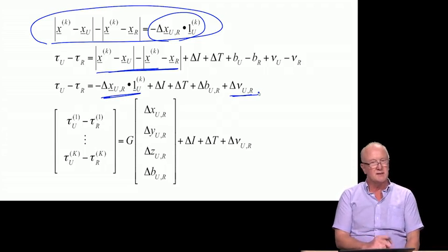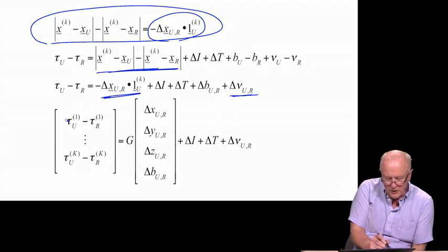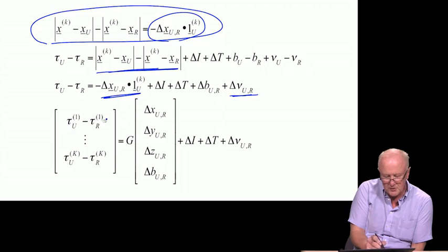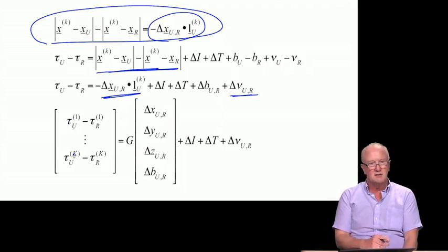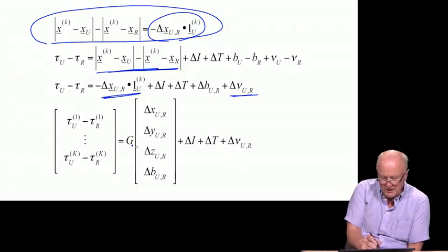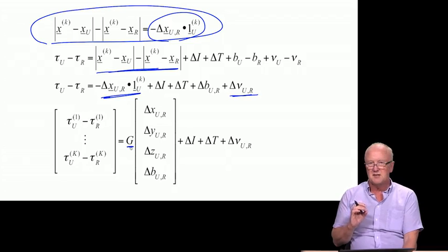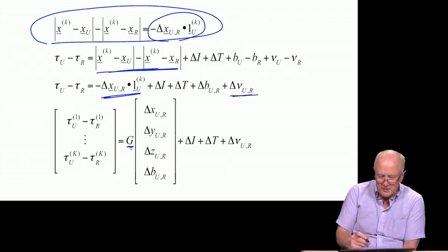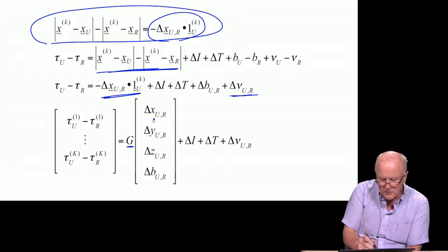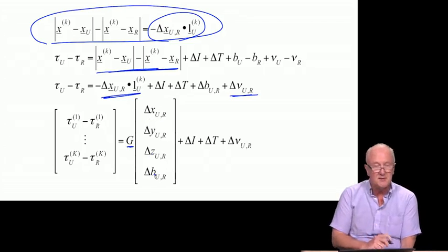So, that's an important thing to be aware of. And here we have delta nu mu r, the difference in the two random noises. With those observations, with those improvements to the equation, we can now once again write a linearized set of equations. And we write the differential range for satellite one here straight down to satellite capital K. Capital K is the eight, nine, or ten for the number of satellites in view. We can now rewrite this as being equal to a capital G. Capital G is the exact same geometry matrix we had for standalone. Times the estimanda, which are now delta x, delta y, delta z, and delta b.